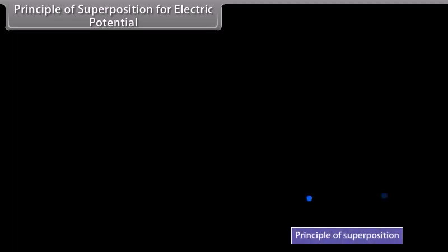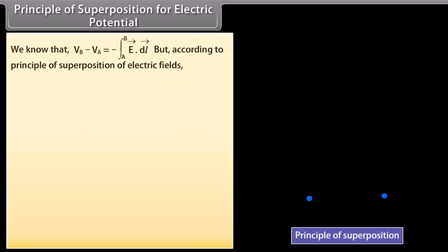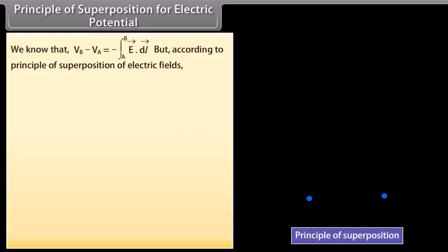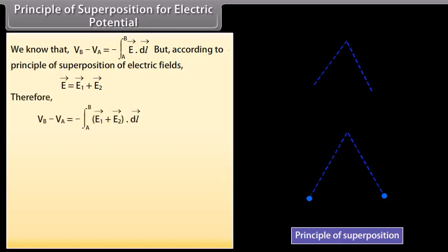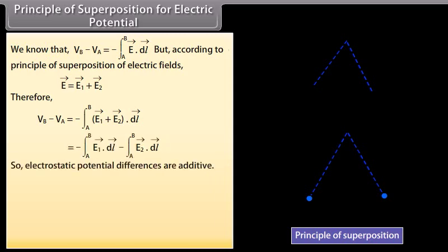Principle of superposition for electric potential. Let us consider two point charges plus Q1 and plus Q2. Take any two points A and B in the combined electrostatic field of the two charges Q1 and Q2. Choose a curve L between A and B. We know that V_B minus V_A equals minus integration from A to B of E vector dot dL vector. According to the principle of superposition of electric fields, E vector equals E1 vector plus E2 vector. Therefore, V_B minus V_A equals minus integration from A to B of E1 vector dot dL vector, so electrostatic potential differences are additive.